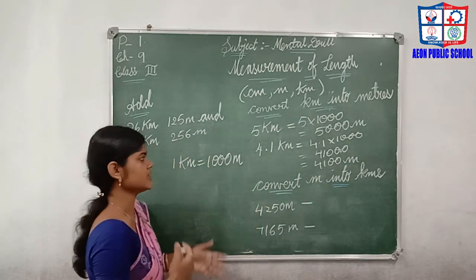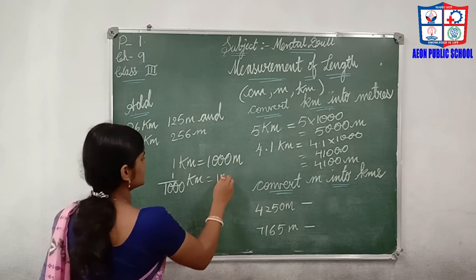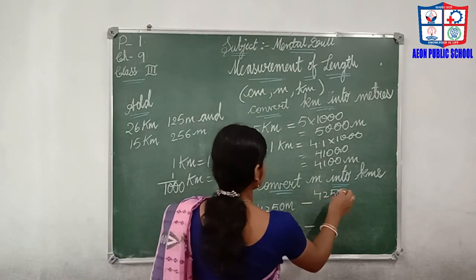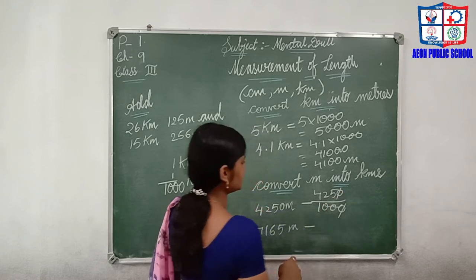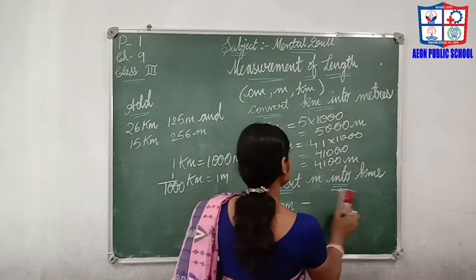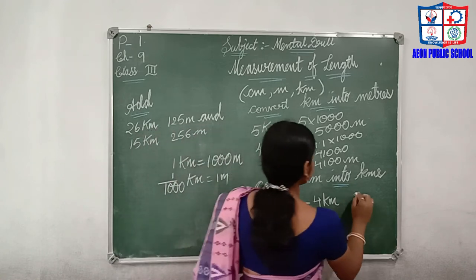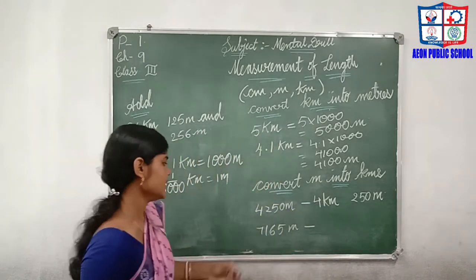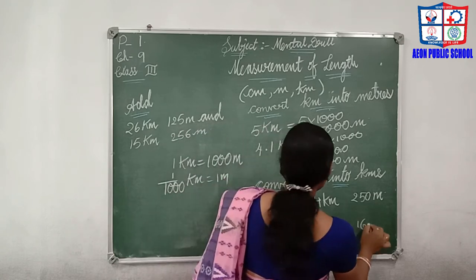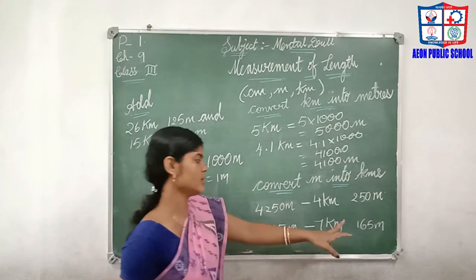Now convert meters into kilometers — the reverse method. To change meters into kilometers, divide by 1000. For example, 4250 meters: divide by 1000, cancel three zeros, giving quotient 4 and remainder 250. So the answer is 4 kilometers and 250 meters. Another example: 7165 meters divided by 1000 gives 7 kilometers and 165 meters. The quotient is kilometers and the remainder is meters.